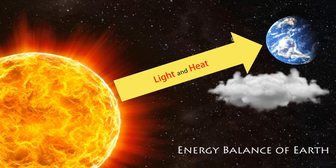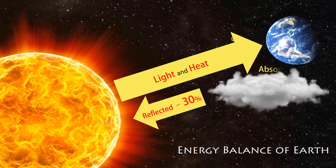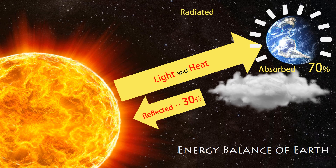In summary, the earth reflects back 30% of the energy received from the sun. 70% is absorbed, which is subsequently radiated back into space. This process of absorption causes various weather phenomena like winds, rains, and ocean currents, and this is how the energy balance of the earth is maintained.